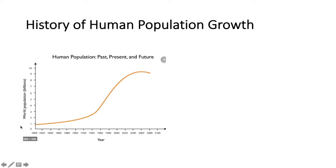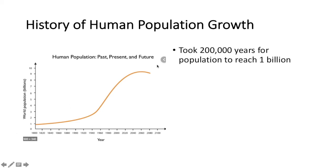By the 1800s, we had 1 billion people, and it had taken us about 200,000 years — from the very beginning of our species to 1800 — to reach that 1 billion mark.